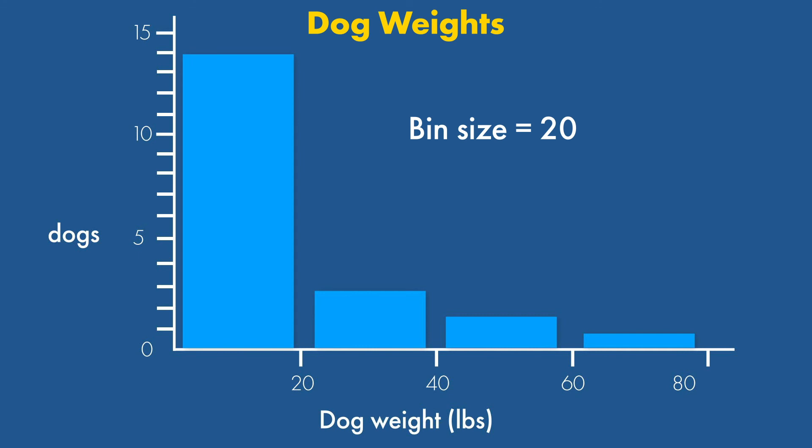As you're noticing with histograms, there's no way to know where within each bin a data point falls, so we don't know whether the one dog in the 60 to 80-pound range is 60 or 79 pounds.